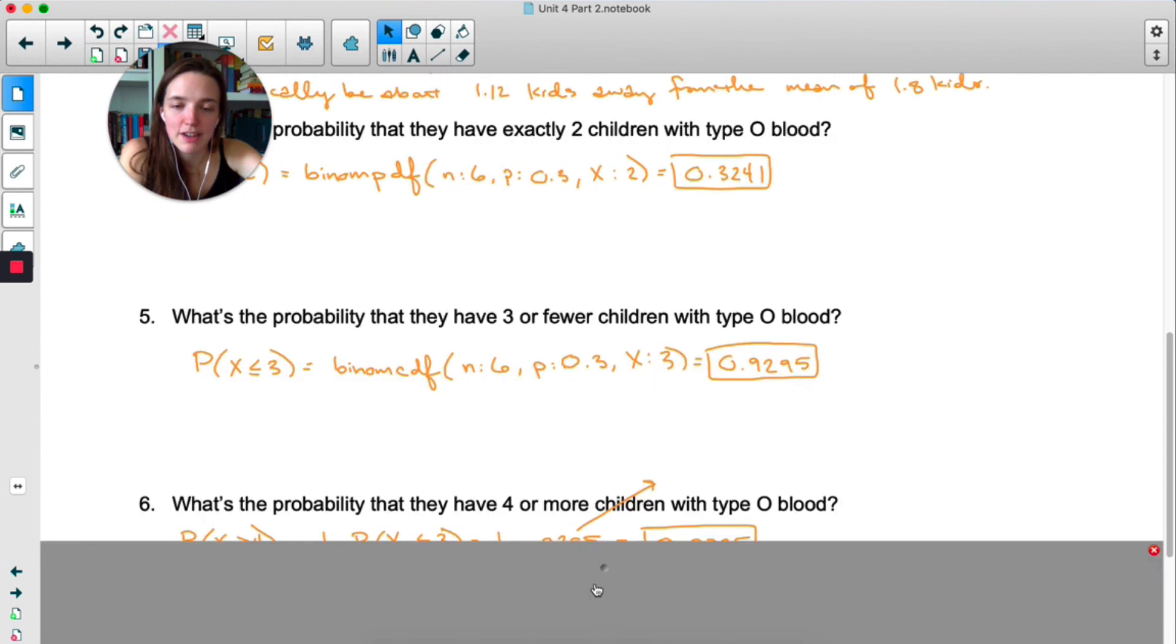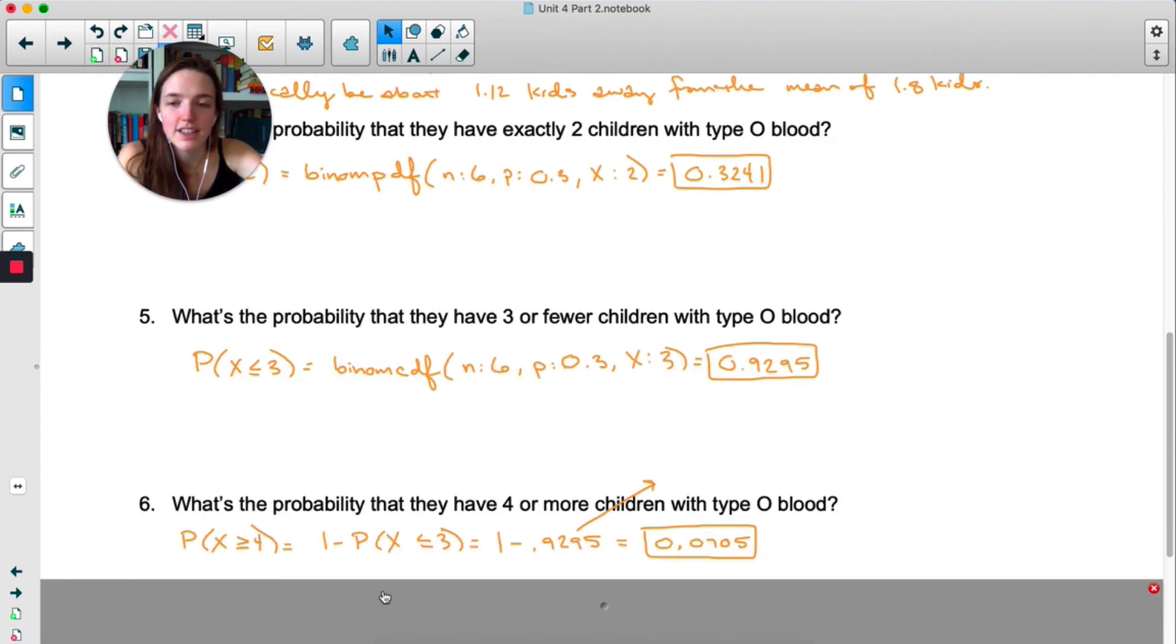And then the probability that they have four or more children. This would be 1 minus the probability that they have three or less. So 1 minus x less than or equal to 3. And what do you know? We already found x less than or equal to 3. It was right here. So I can just do 1 minus the answer I got in number 5.